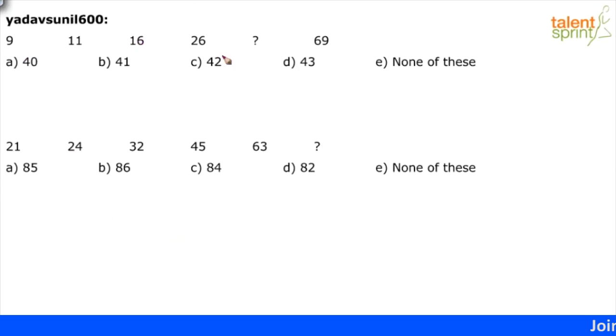The first series is 9, 11, 16, 26, question mark, 69. What is the logic?